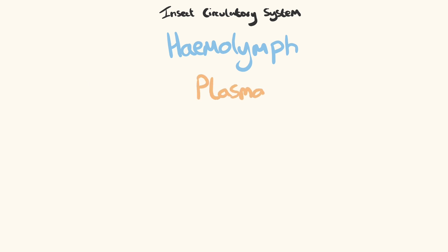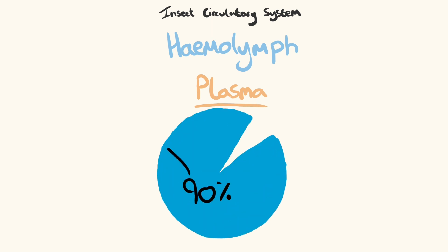Plasma is the main constituent of haemolymph, and being approximately 90% water, it is an important reserve against desiccation.